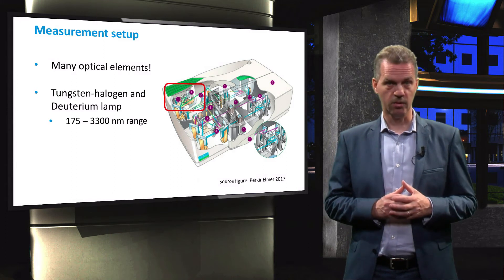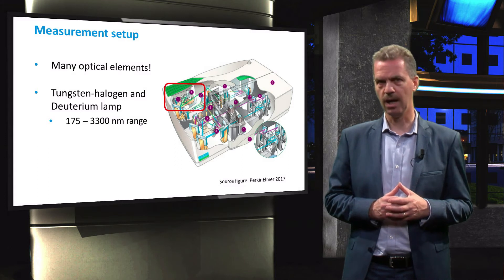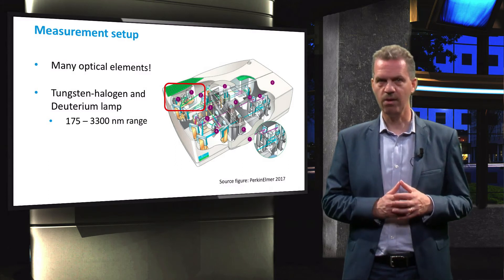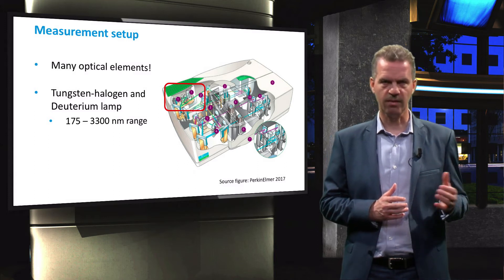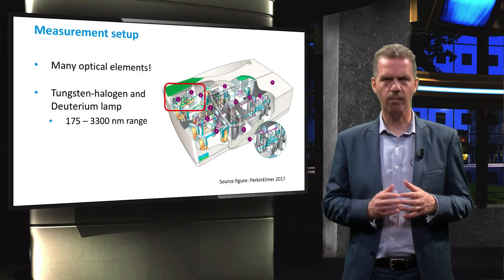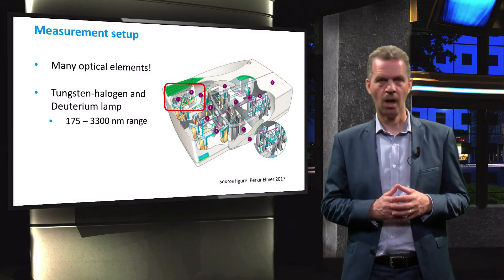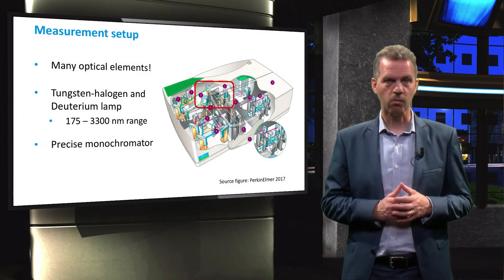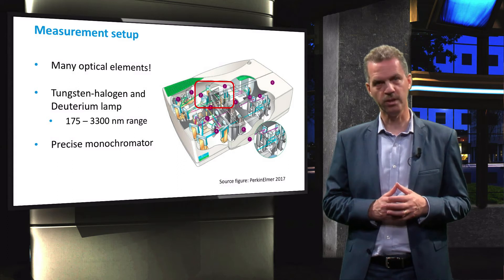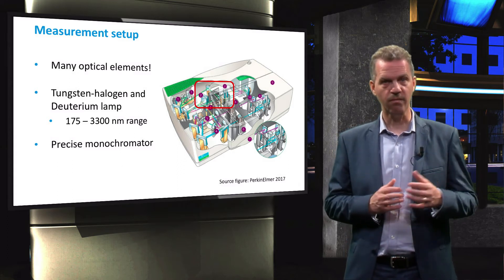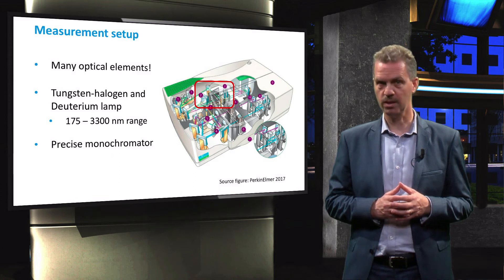The light sources in the instrument are a tungsten halogen lamp and a deuterium lamp. Together with very precise optical components, the test spectrum ranges from 175 nm all the way up to deep infrared at 3300 nm. The instrument can produce monochromatic light with a resolution smaller than 0.20 nm, which means that the given wavelength varies only within a bandwidth of 0.20 nm.